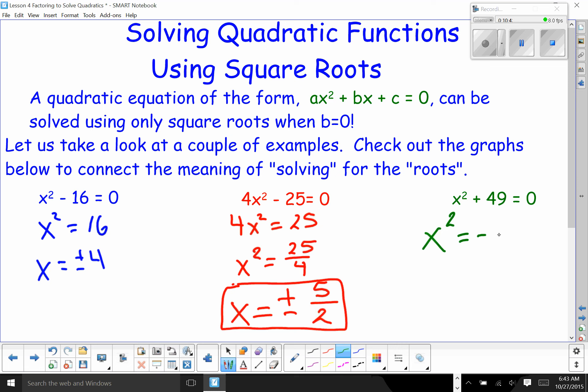Finally, over here, I have x squared is equal to negative 49. This is going to be x is equal to plus or minus the square root of negative 49. In this case, at this point in time, you simply put down no real solutions. Once we do imaginary numbers, we'll find out how to get a solution, an imaginary solution. For right now, there's simply no real solutions.